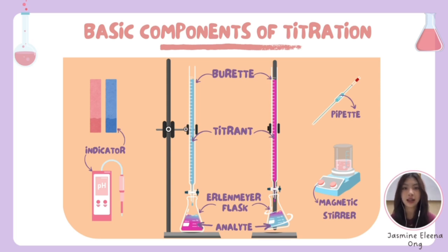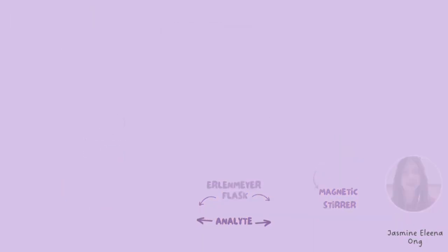Lastly, an indicator is a chemical substance that changes color at the equivalence point, signaling the end of the titration. There are different types of indicators, each with a specific pH range at which it changes color.